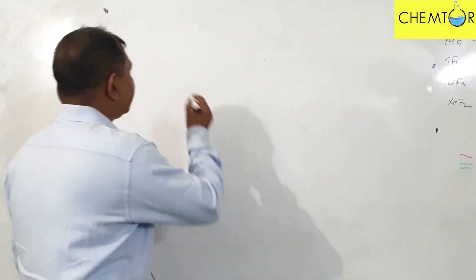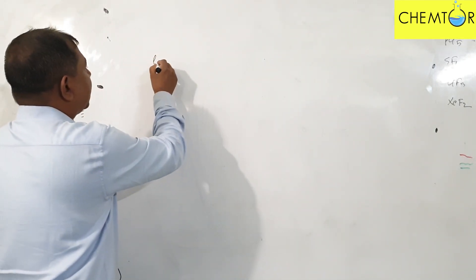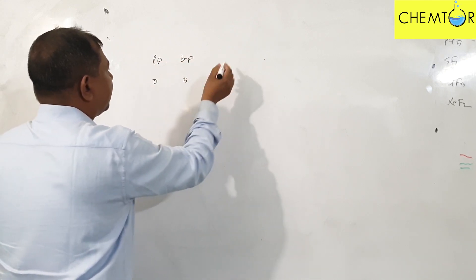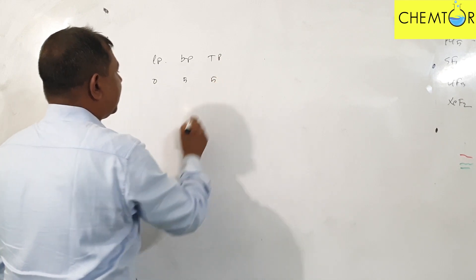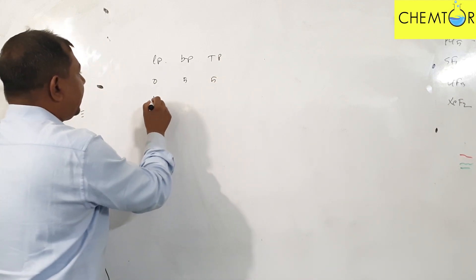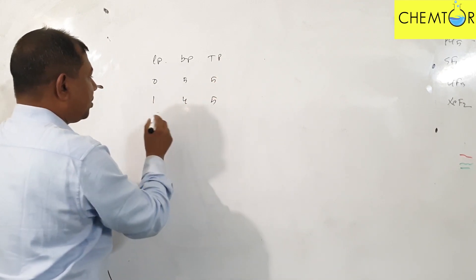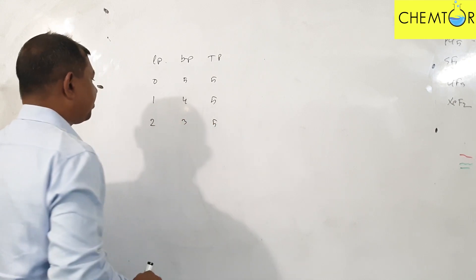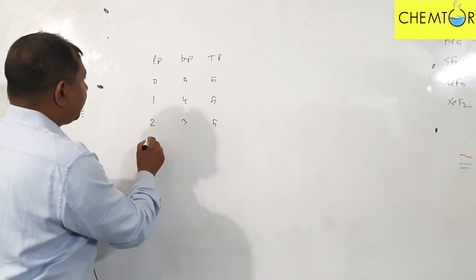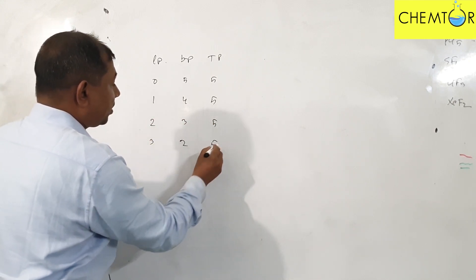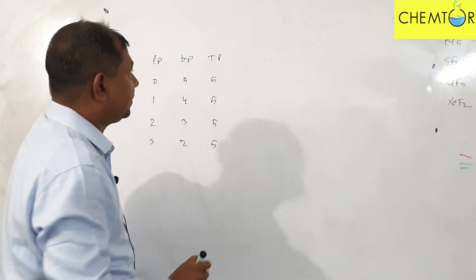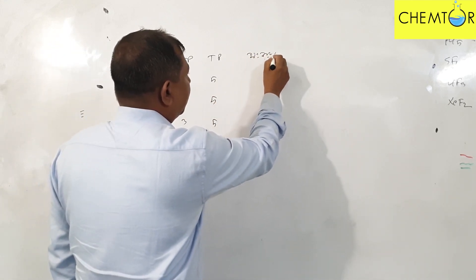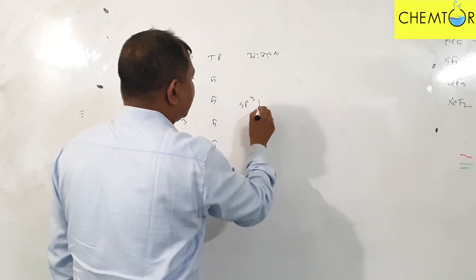Here we have Lone-Pair Electron and Bond-Pair Electron. If Lone-Pair is 0, Bond-Pair is 5. Then Lone-Pair is 1, Bond-Pair is 4, so total 5. Then Lone-Pair is 2, Bond-Pair is 3, so total 5. Then Lone-Pair is 3, Bond-Pair is 2, so total 5. If the total is 5 and the same applies, if it is 3, then the same is 3D.